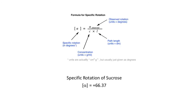For this experiment, we are going to look at the observed rotation of sucrose, as well as the observed rotation of the hydrolyzed products — glucose and fructose — to measure the success of the reaction. We measure the observed value with our instrument. The path length is 2 decimeters for this specific instrument. Using the observed rotation, concentration, and path length, we calculate the specific rotation and compare it to the literature value for sucrose, which is 66.37 degrees.